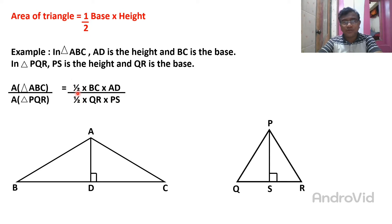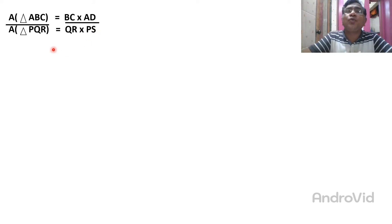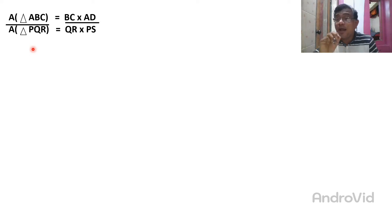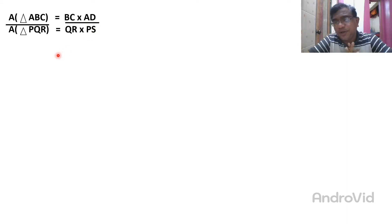So this half cancels. Area of triangle ABC upon area of triangle PQR is equal to BC × AD divided by QR × PS. This means when in two triangles the base and height are not the same, then area depends on the product of base into height ratio. This is the first property: the ratio of the area of two triangles is equal to the ratio of the product of their bases and corresponding heights.